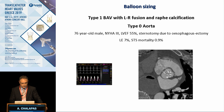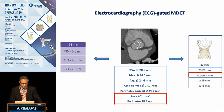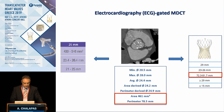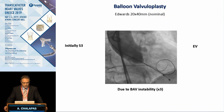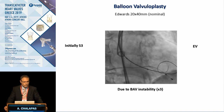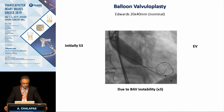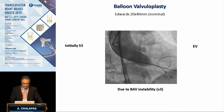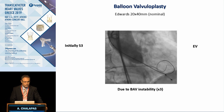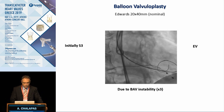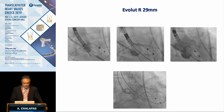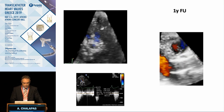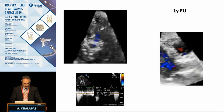When do we decide to use balloon sizing? Here is an example of type 1 left-right fusion with raphe calcification and no ascending aorta dilatation. According to the anatomical information, we had to choose between Evolut 29 or SAPIEN 3 26. We initially planned a SAPIEN valve, but during valvuloplasty, we saw great instability of the 20 mm balloon, corresponding to the smaller annulus dimensions. Based on that, we changed strategy and used the Evolut 29 mm, achieving an excellent hemodynamic result with mild paravalvular leakage.